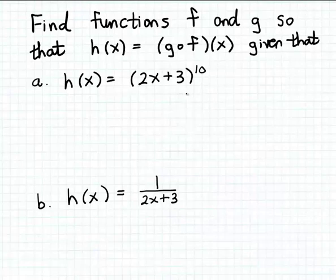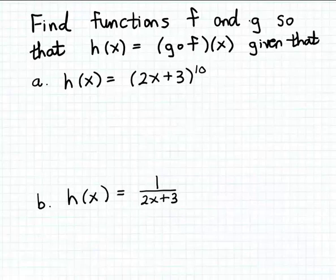In these examples, we're going to be given the formula for a function. We're going to call that function h in both of these examples. What we want to do is find two new functions f and g so that h is the composition of g and f. You really can't find the formulas for these two new functions f and g systematically or methodically. You have to carry out this process just by inspection or trial and error.